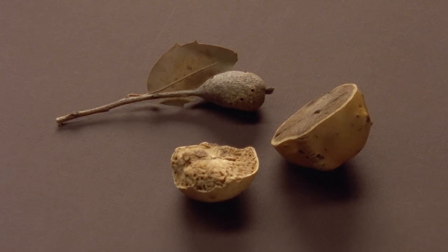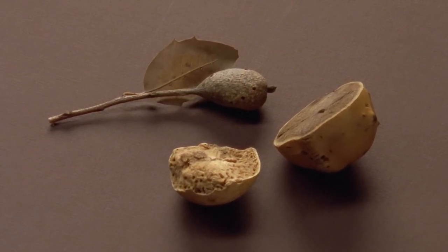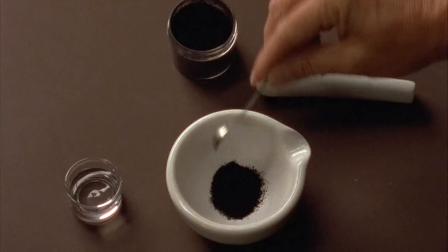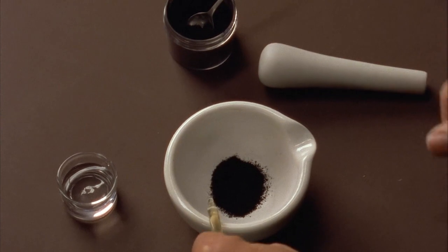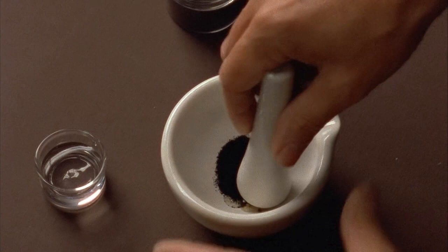Scribes made ink from a variety of materials. Gallnuts, growths found on oak trees, were often used to create a dark black ink. Black ink was also made by dissolving a common carbon substance. The resulting ink was called lamp black.